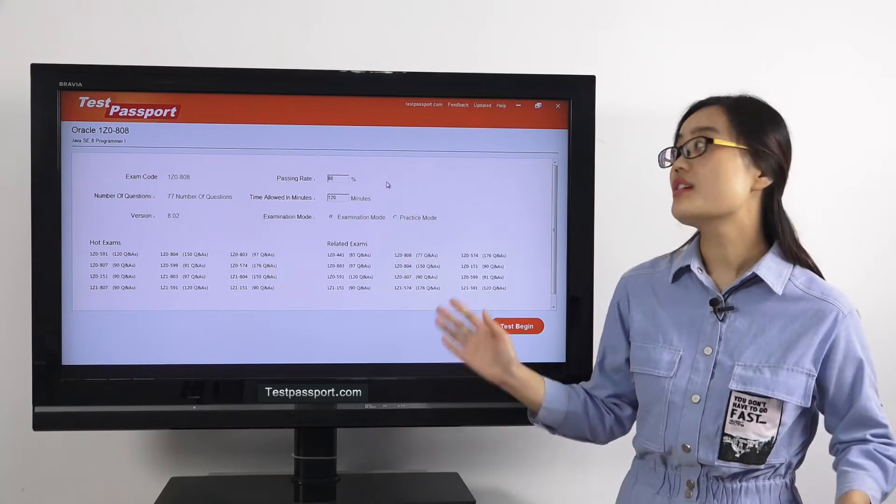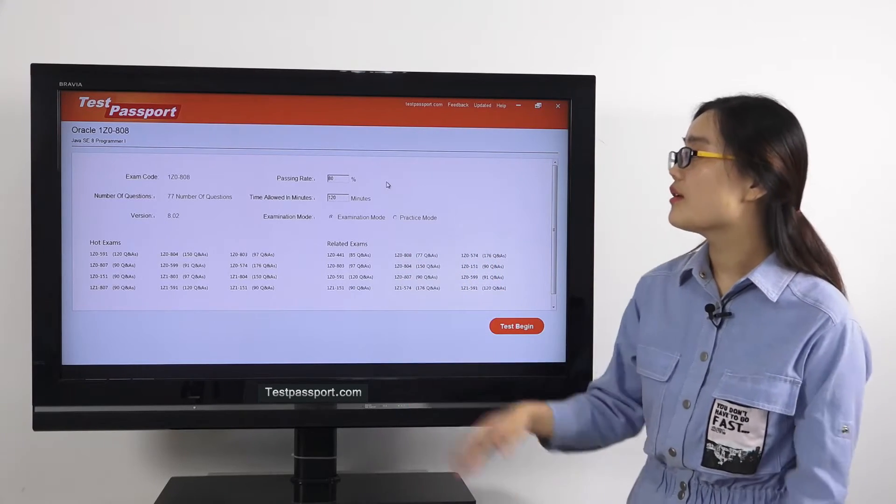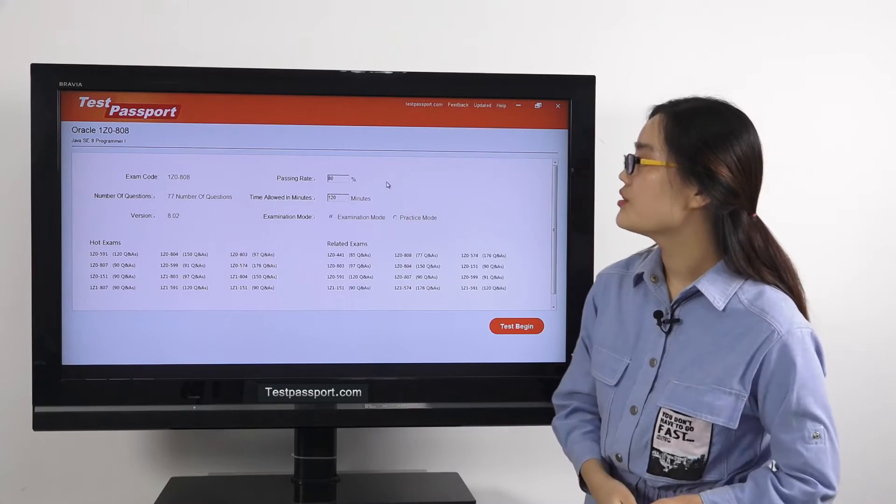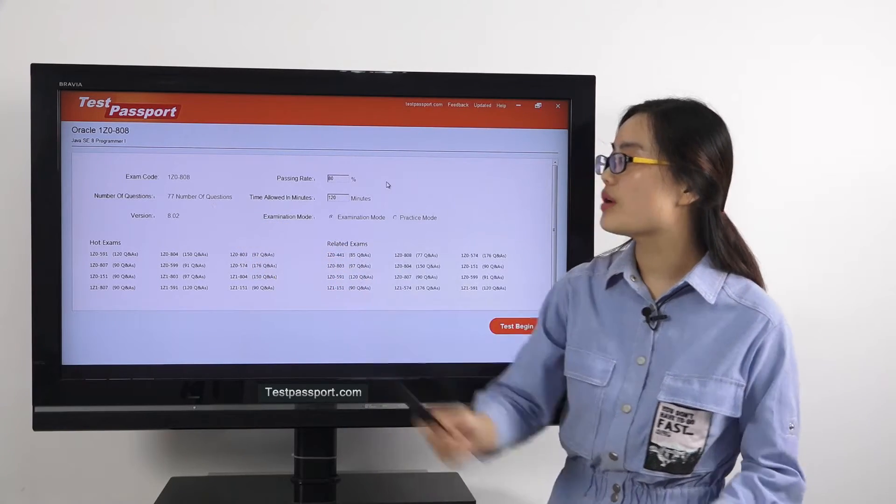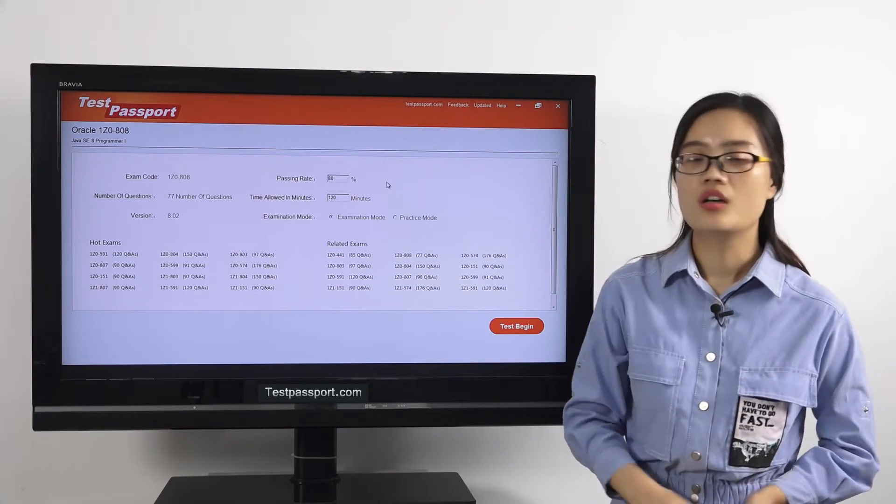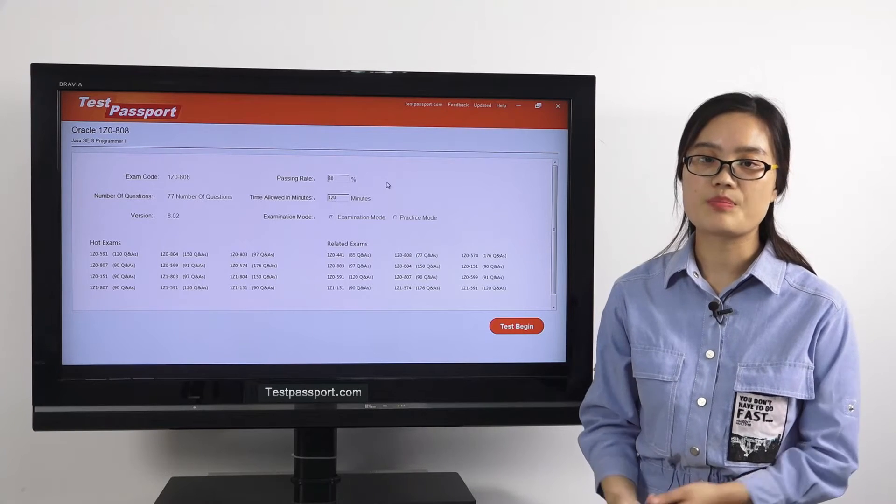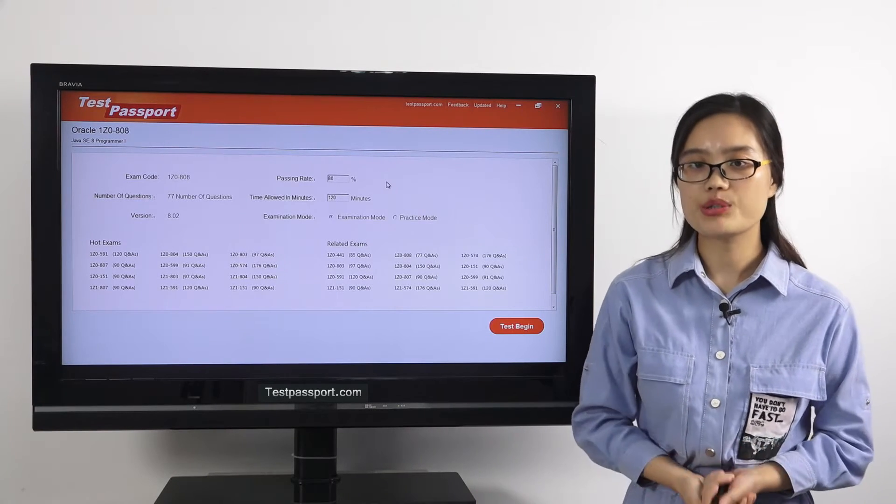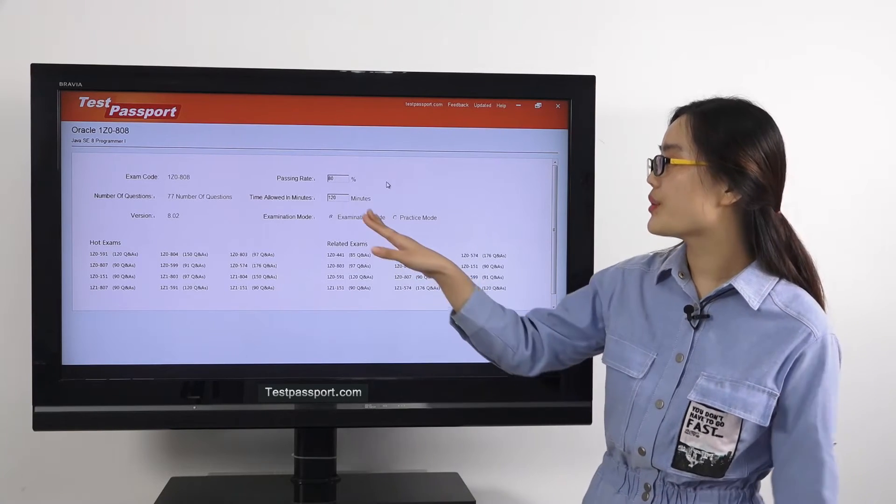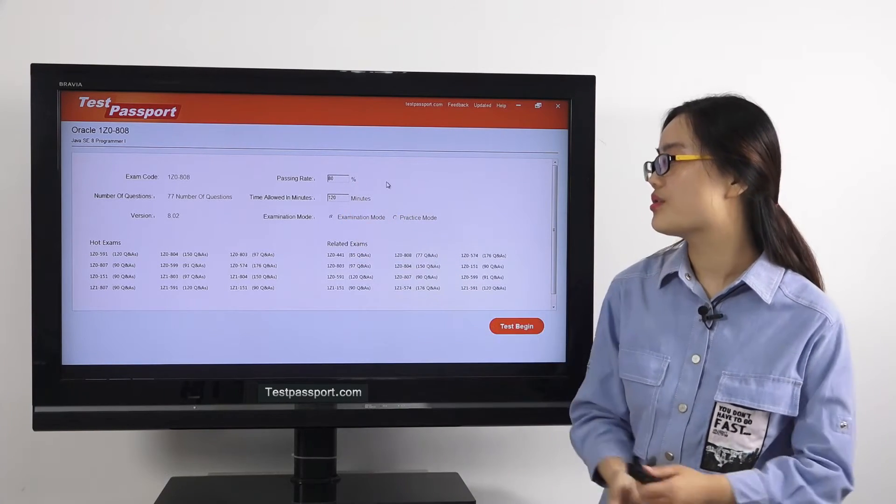You can see our questions here. Let's check our software now. This is the homepage of our testpassport software version. As you can see, there are 77 questions in our software, and the version number is 8.02. If you find the version number has been changed, then please go to our testpassport.com to ask for the update. You can create passing ratio and time by yourself.